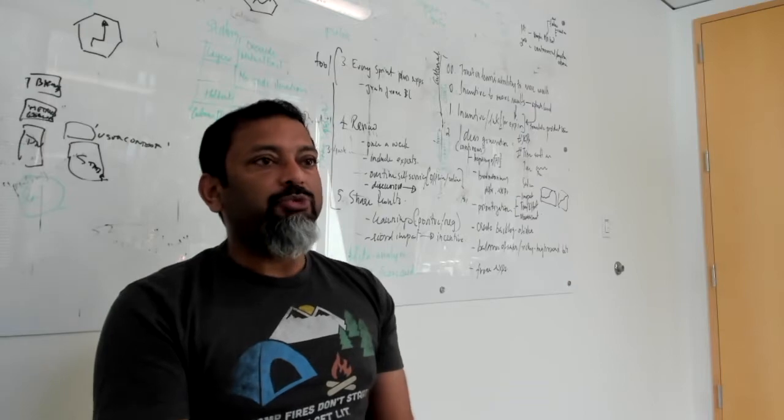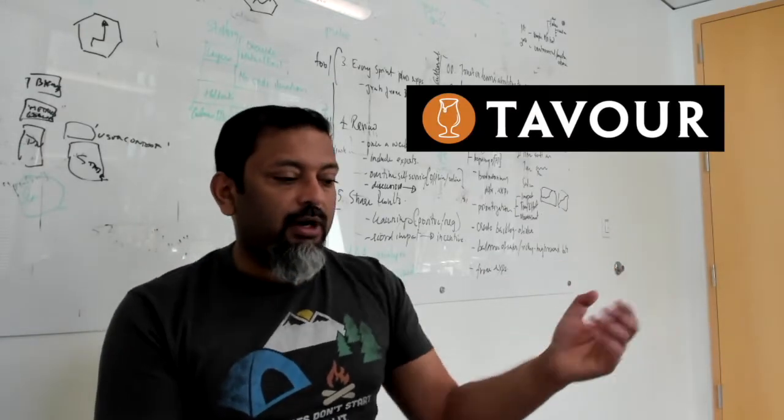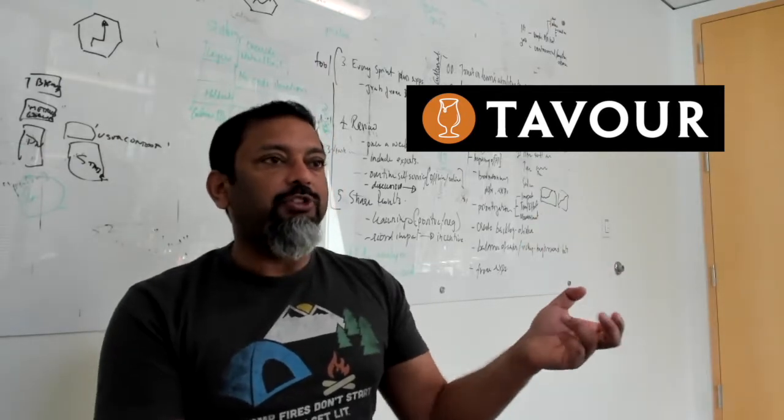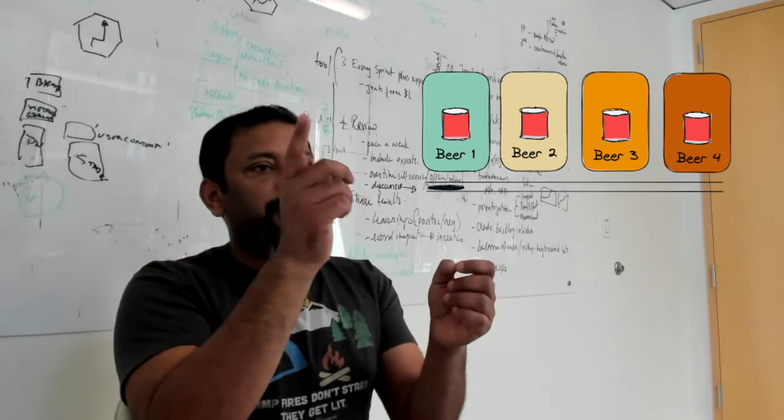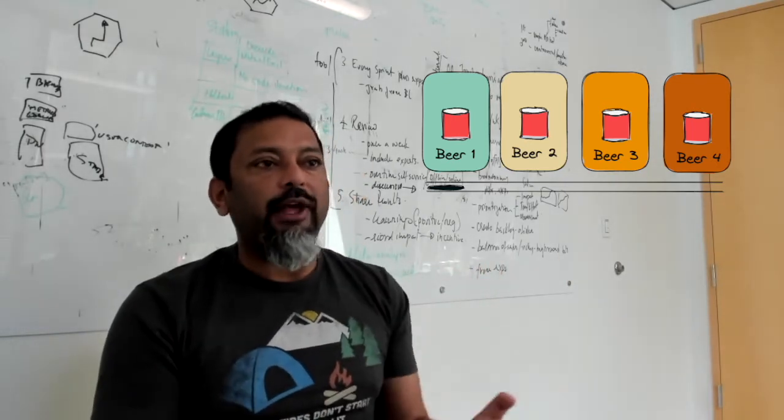A recent example of something like this was with Tavur, a beer subscription company that works in the US. They typically had presented their users with a horizontal feed of different beers that users could swipe through and pick which ones they wanted to add to their cart.